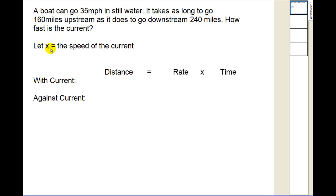So we'll let x be the unknown, which is the speed of the current. And we're going to have to set up two equations using the formula distance equals rate times time.